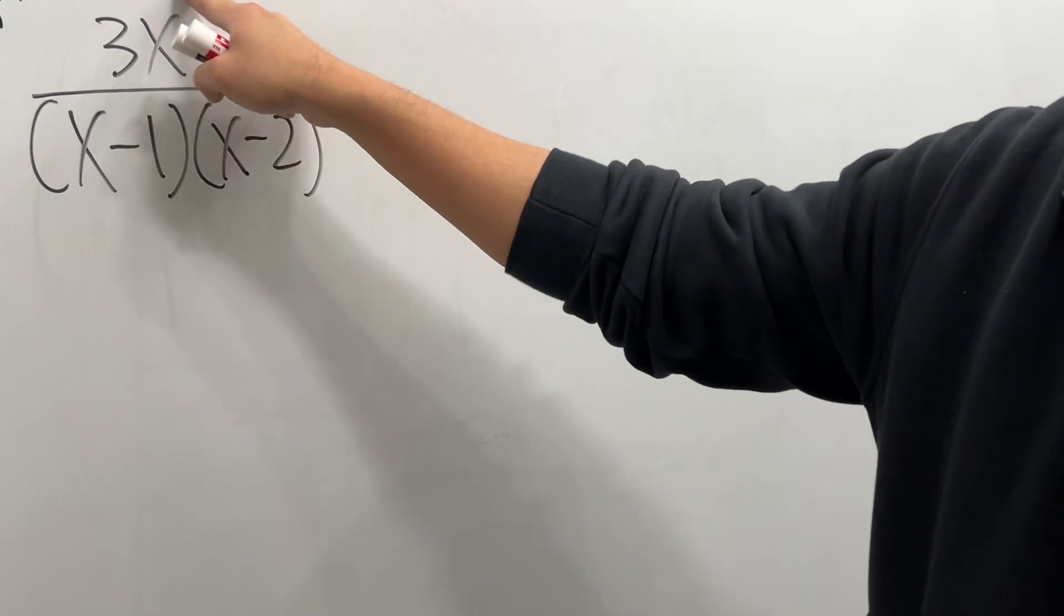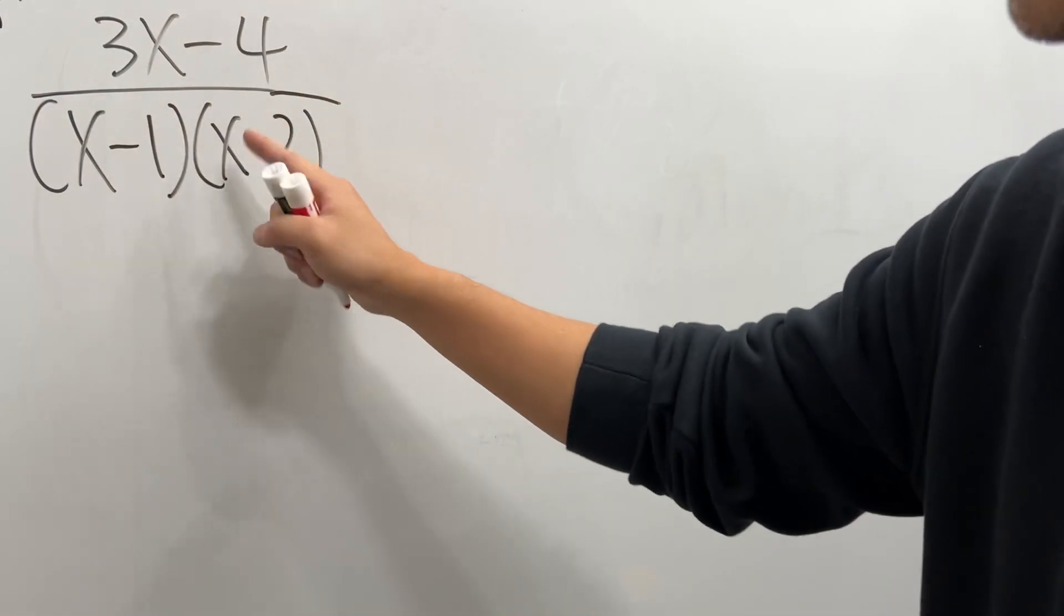Partial fraction the fast way. First, the degree on the top is 1, the degree on the bottom is 2, so we are ready to go.